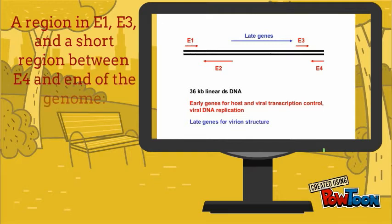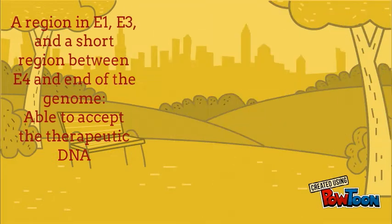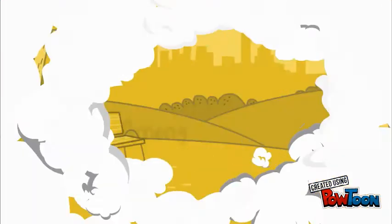The transgene can be inserted into the E1, E3, and the short region between E4 and the end of the genome.